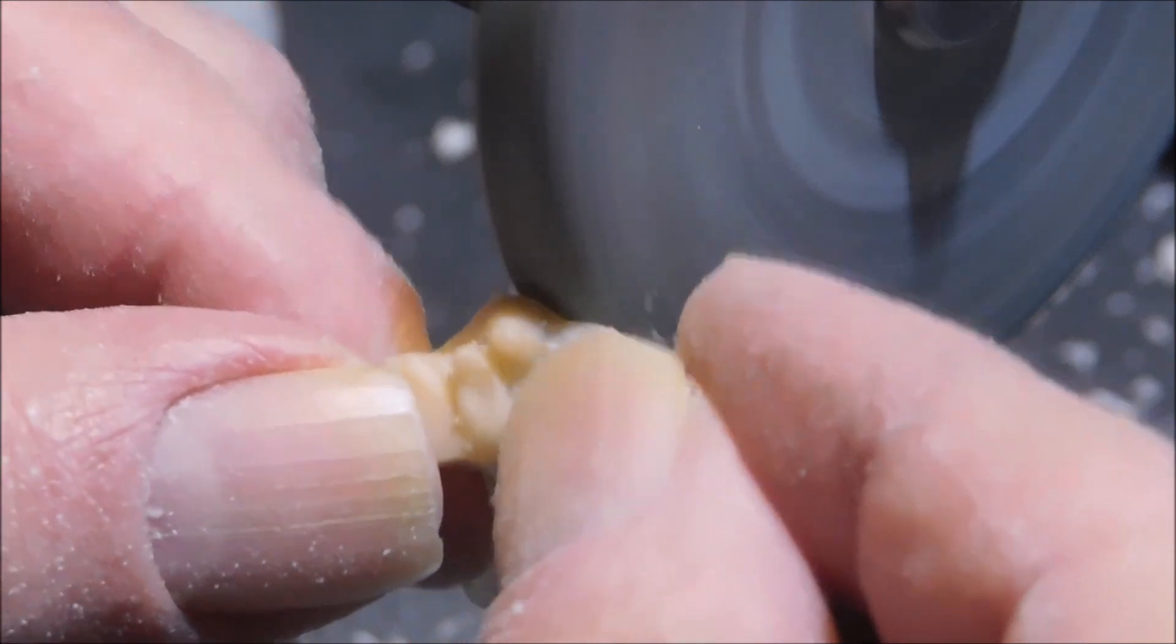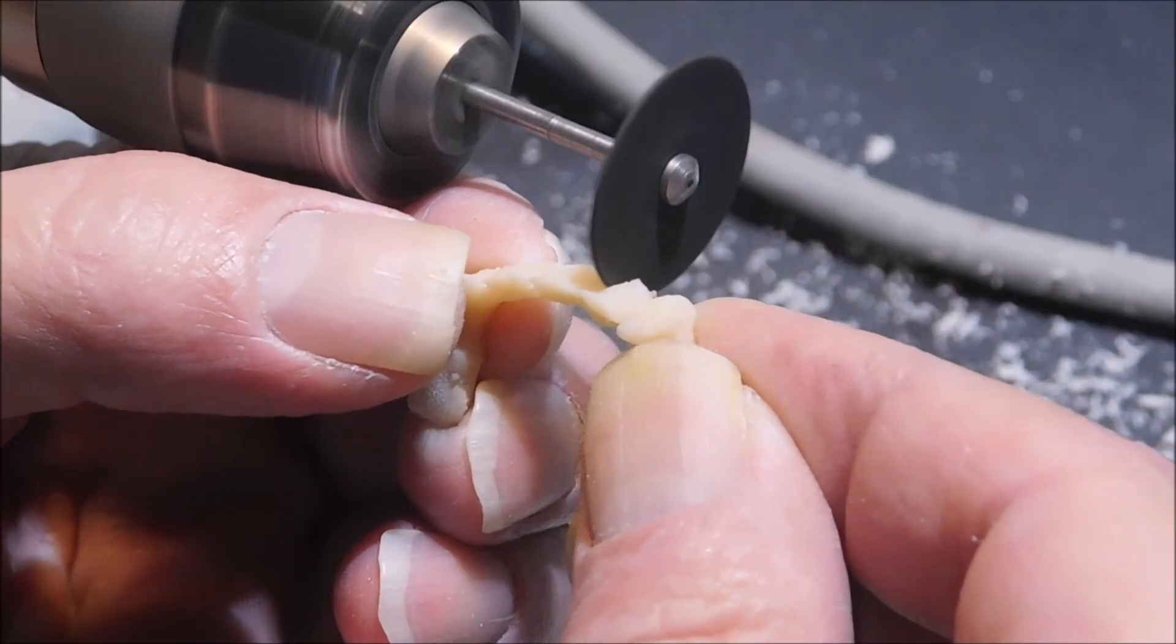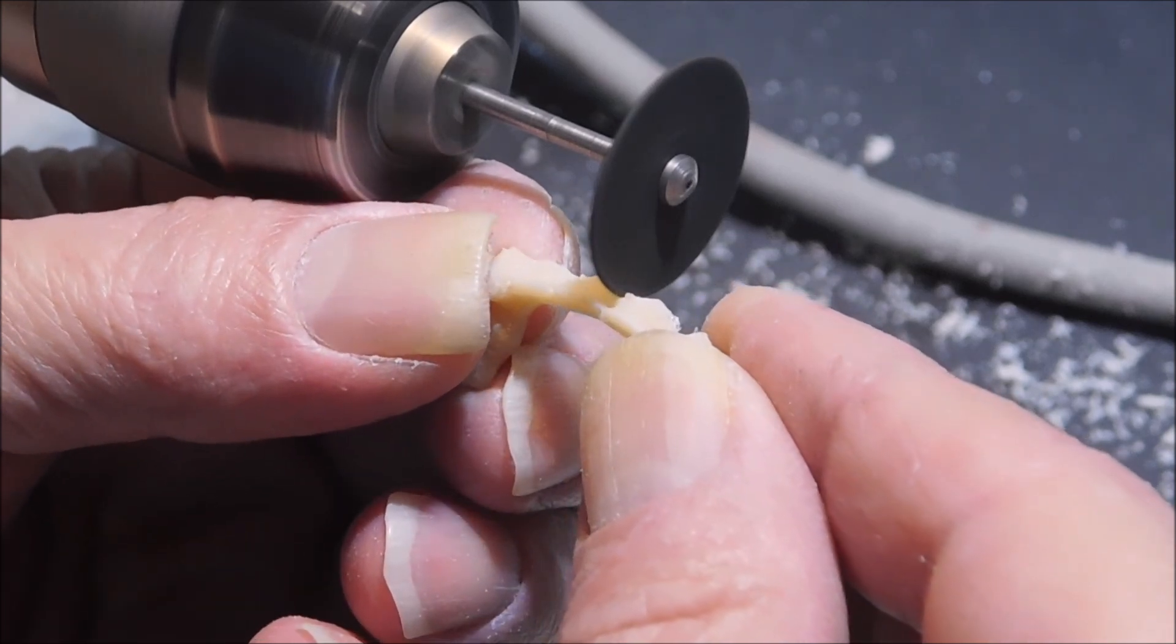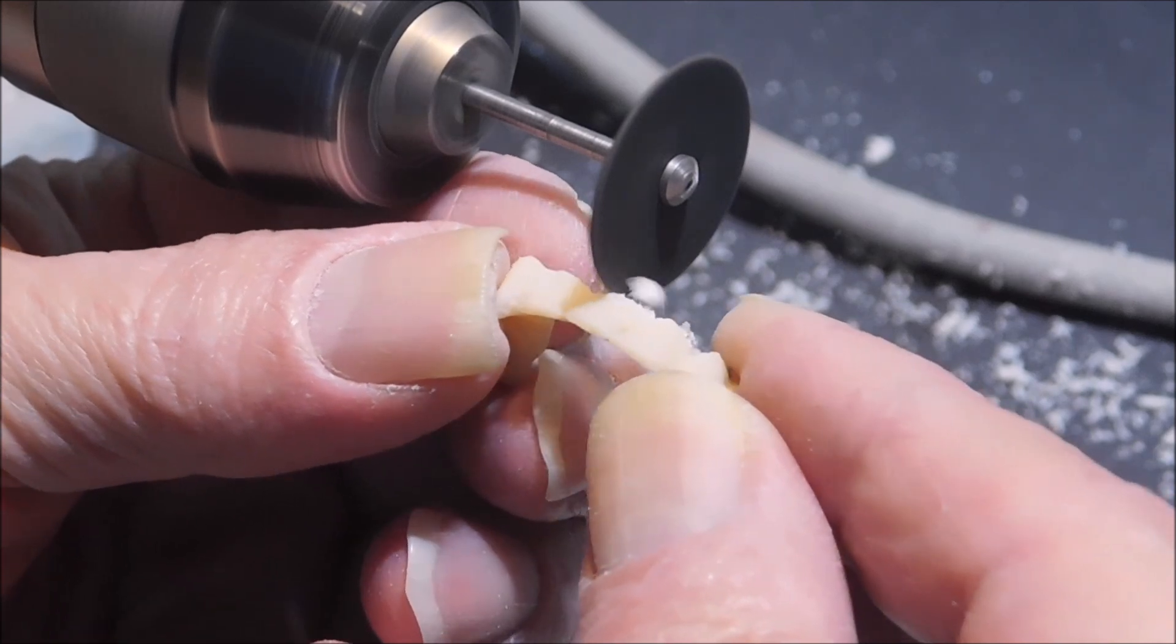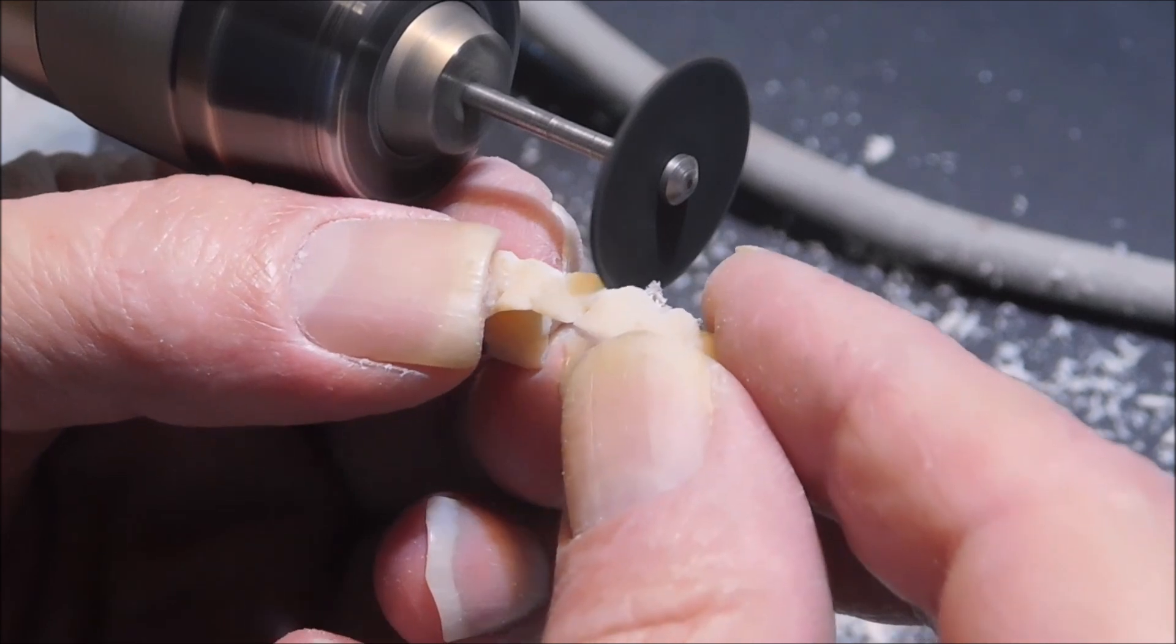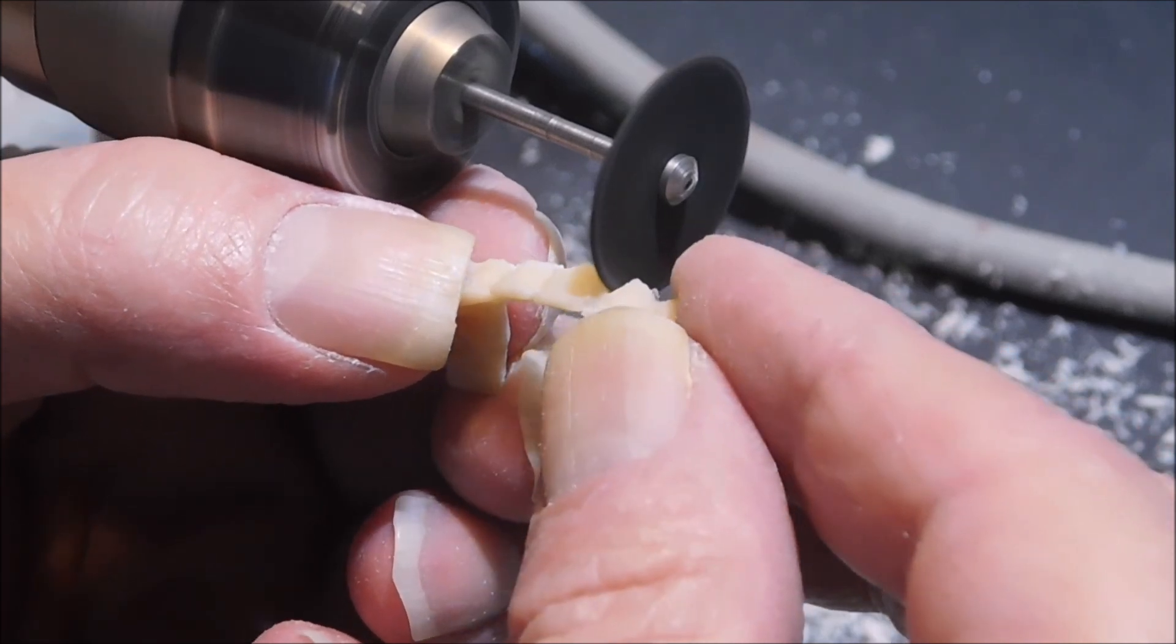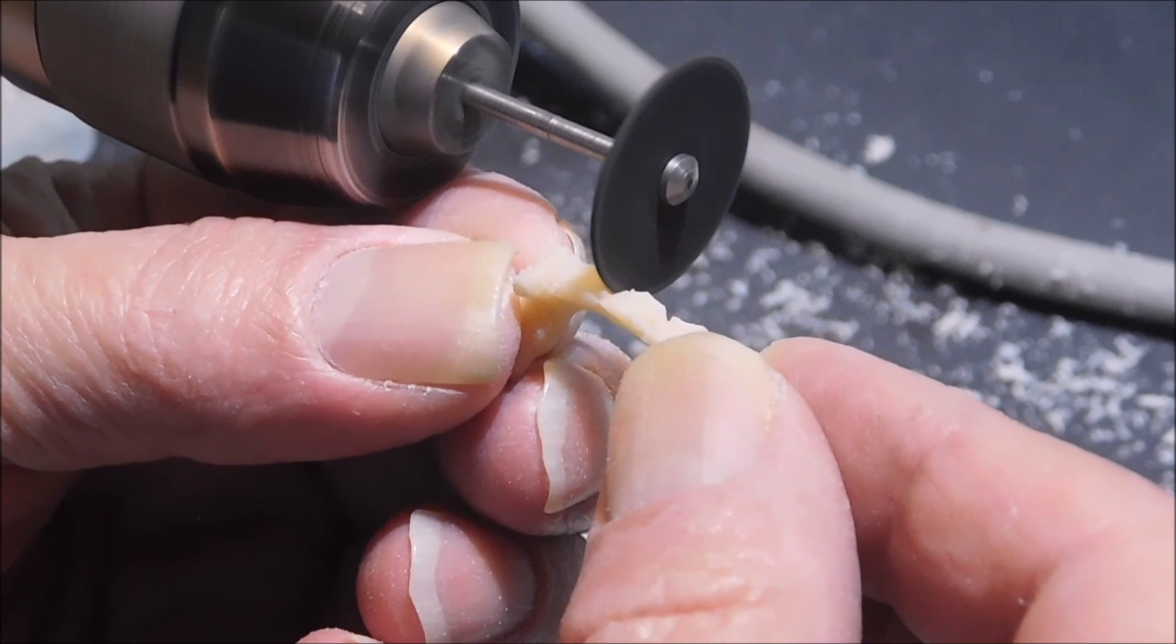The thing about this tool is you have to buy a bunch of burrs and discs, which can be quite expensive. But I can get any Dremel burr to fit in there, and you can get something similar at Harbor Freight. For polishing and pumicing, it can take a little water.